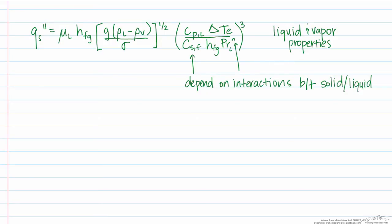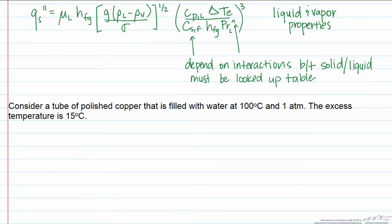Let's take a look at an example and show you how to find the heat transfer coefficient given our temperatures, the fluid, and the surface. We're going to consider a tube that is polished copper, and we need to know that to find our two constants. The fluid is going to be water. The change in temperature is going to be 15 degrees C.